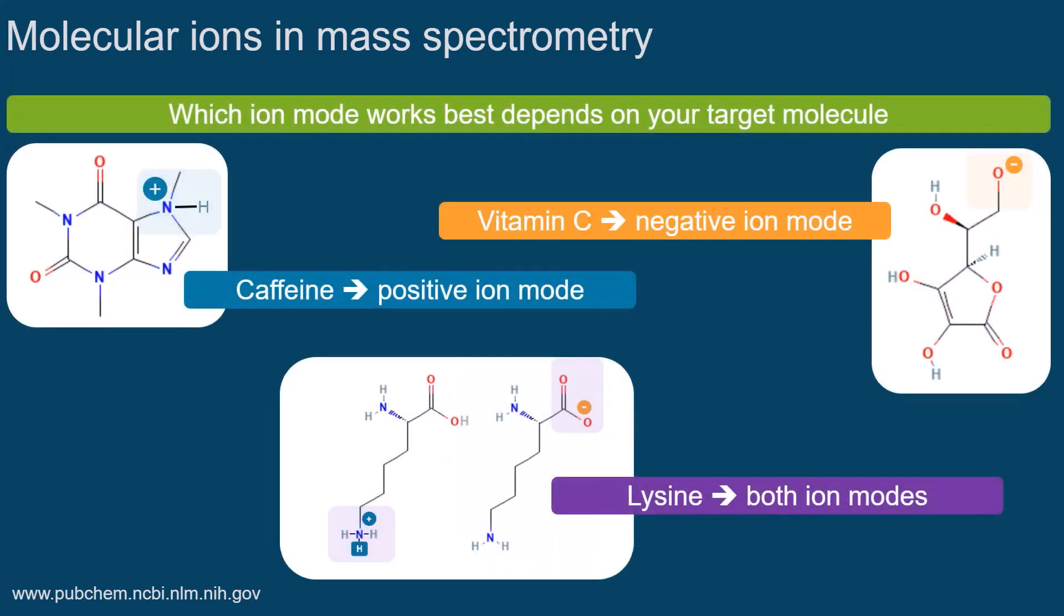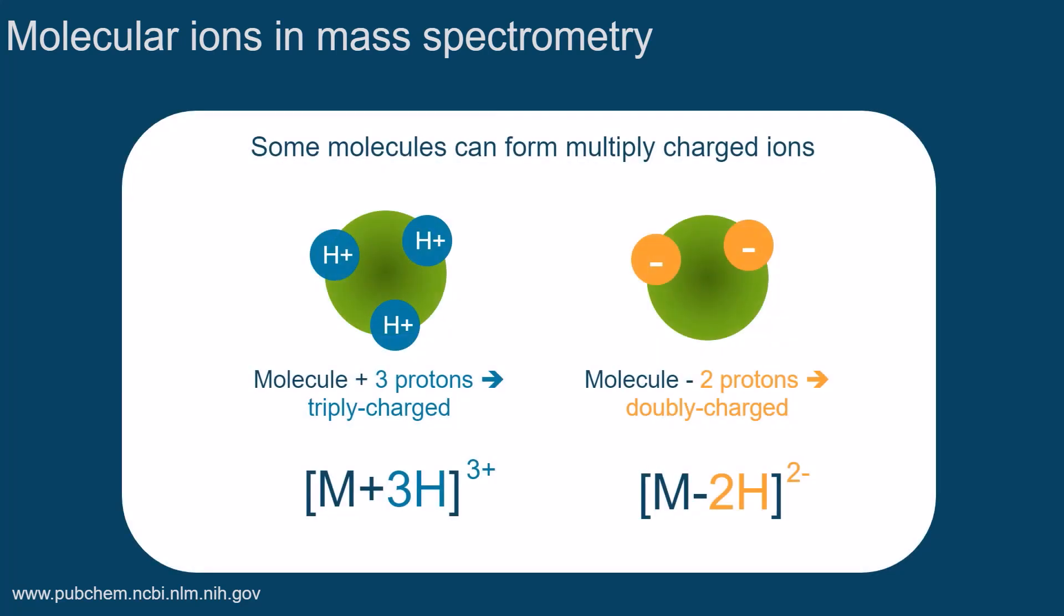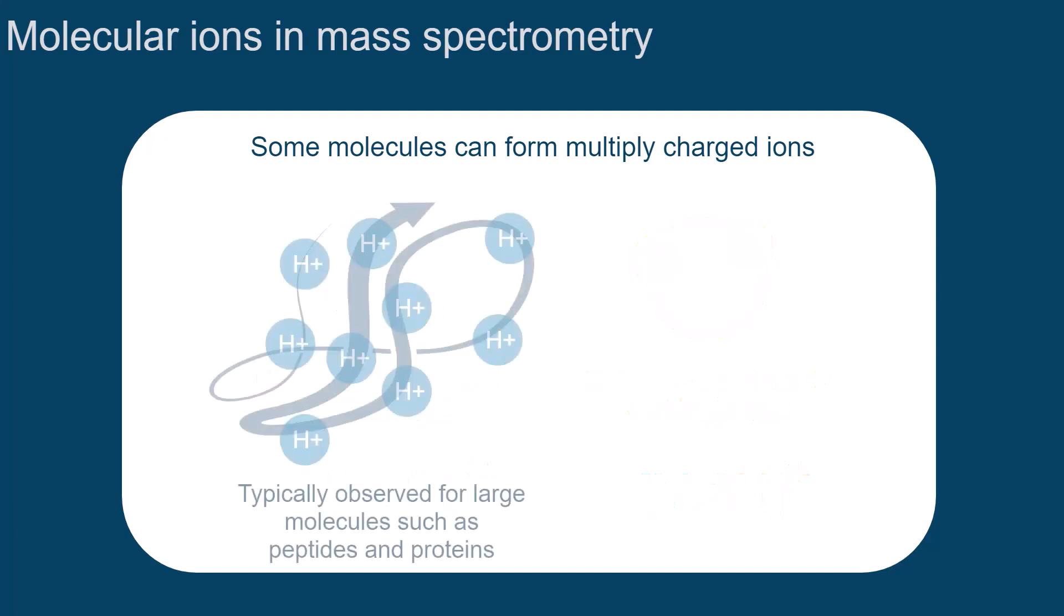Which ion mode works best depends on the molecule you want to analyze. If molecular properties allow, molecules can also be observed as multiply charged ions. This is typically the case for larger molecules, for example peptides or proteins.